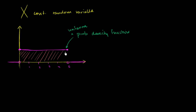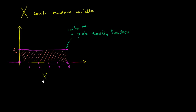So for this random variable, in order for this to be a legitimate probability density function or probability distribution, the area highlighted in orange needs to be equal to 1. Given that this base is of length 5, what does this height need to be? Well, 5 times what equals 1? 5 times its reciprocal. So we have a uniform density of 1/5.